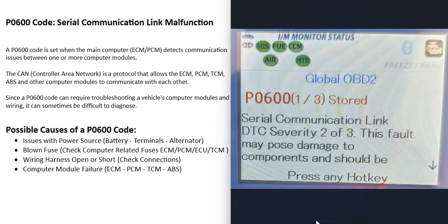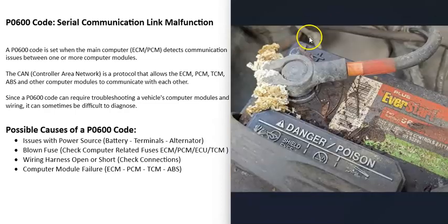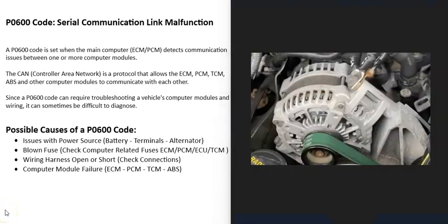The first possible cause is a problem with the power source going to these computer modules. All the different computers in a vehicle need a good, stable power supply, so the first thing to do is check your battery — make sure it's good, with no corrosion on the terminals. If there is corrosion, clean it up and ensure good contact, because a bad battery or corroded cables mean the computer modules won't get a good power source.